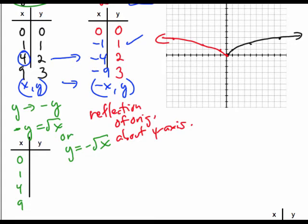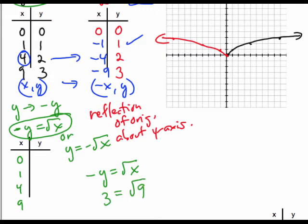And let's start with the bottom point in the table this time. So looking at my equation here, when I put 9 in, I know I get 3 out. But my output is no longer called y, it's called negative y.